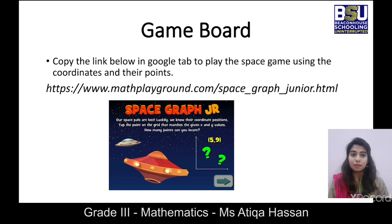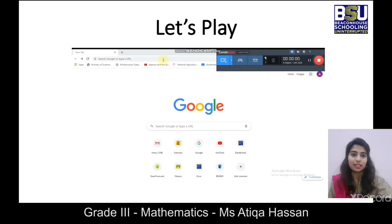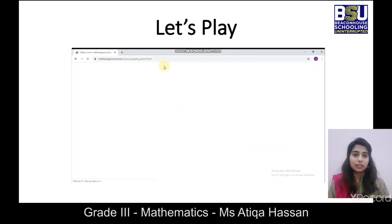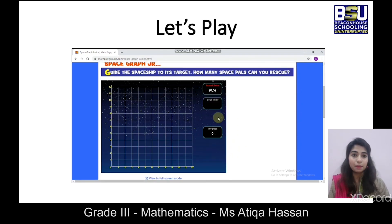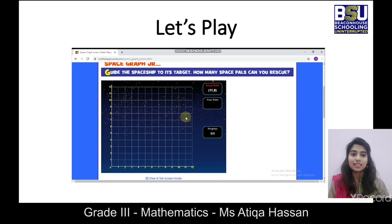Now we have a game called Spacecraft Jr. — this is very interesting! You can copy the link into your browser tab and play it. Make sure you have Adobe Flash Player to run this game. You simply have to identify the coordinate pairs shown — for example, (0, 5) means 0 on the x-axis and 5 on the y-axis — and click on the correct point. Then the next coordinate pair is (11, 8): 11 on the x-axis and 8 on the y-axis. Click and you reach it!